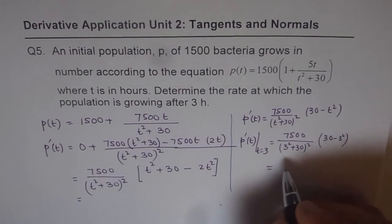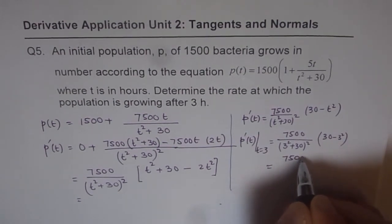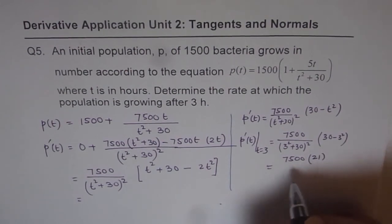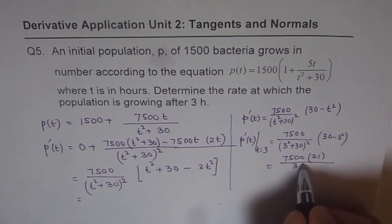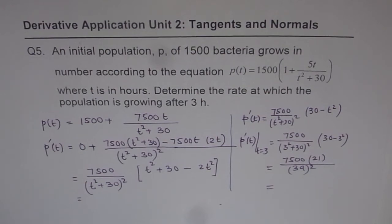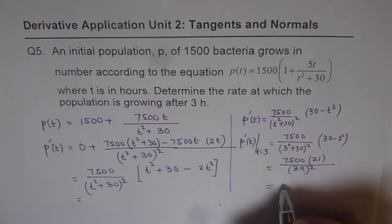So we can write this as 7500 times 30 minus 9, which is 21, over 9 plus 30 is 39 whole square. That is what it is. And when you use calculator and then you can calculate this answer, you get 103.55.